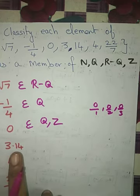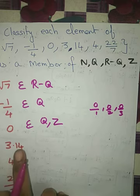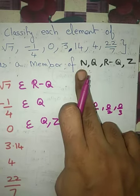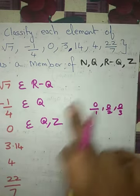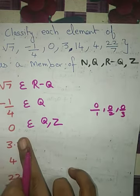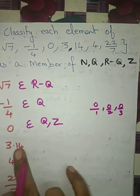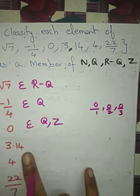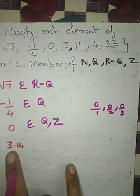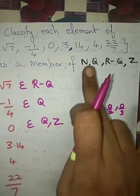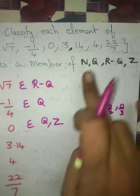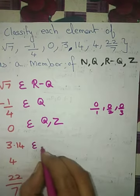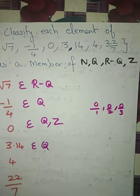Next, 3.14. It is a decimal number, so it is not a natural number, not an irrational number since there is no root symbol, and not an integer since decimals are not allowed. However, any fractional number when divided gives a decimal, so all decimal numbers are rational numbers. Therefore 3.14 belongs to Q.